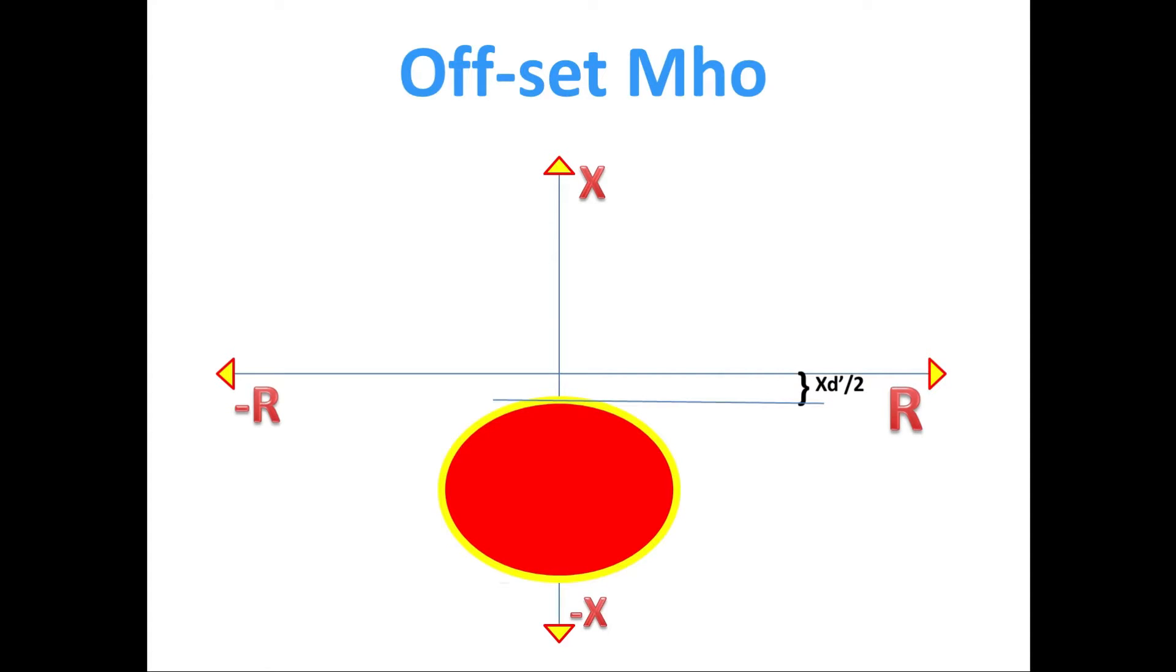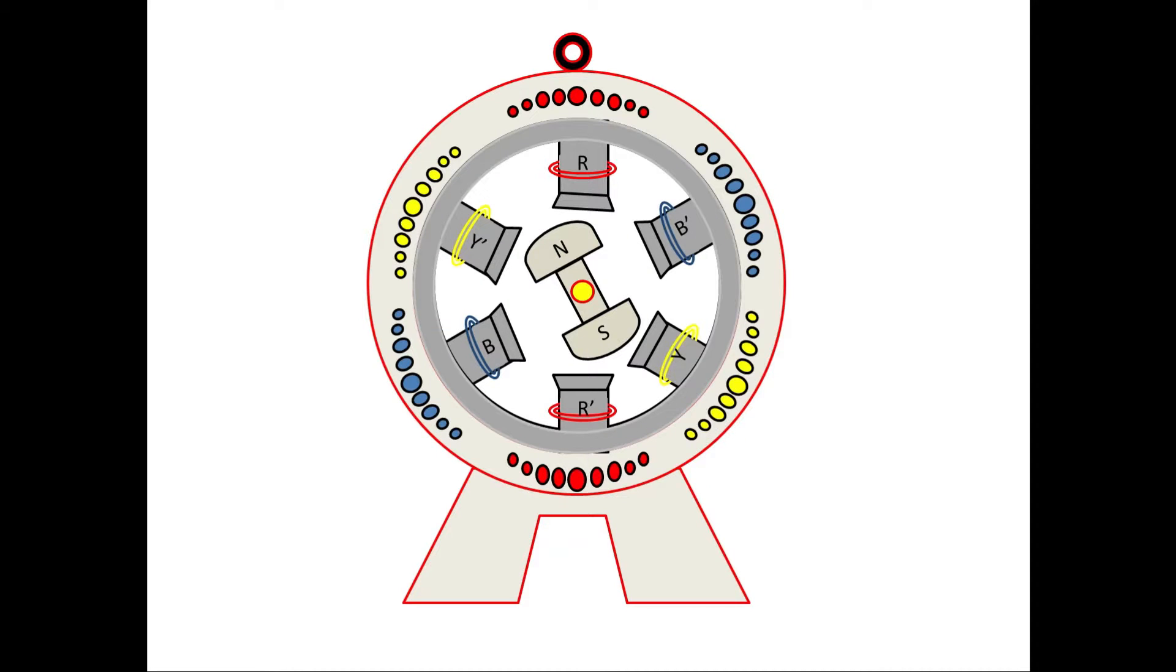Now we will see the generator. In generator, we have stator and rotor. When the rotor rotates with magnetic field, the stator also produces one magnetic field, which also goes along with rotor magnetic field with some angle.